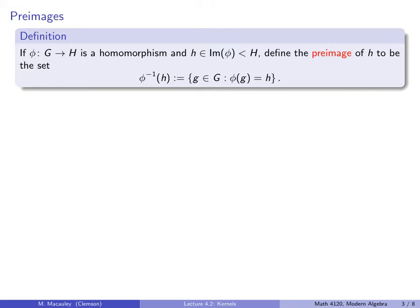Here's a useful definition. If phi is a homomorphism from G to H, and we take an element in the image of phi — so it lives over in H — then define the preimage of that element h to be the following set. We write it as phi to the minus one of h: it's the set of all elements in the domain that get mapped to h. I want to emphasize that although we write it like phi inverse, phi does not need to have an inverse — if this mapping is not one-to-one, phi inverse does not exist as a function. However, we can still define this set.